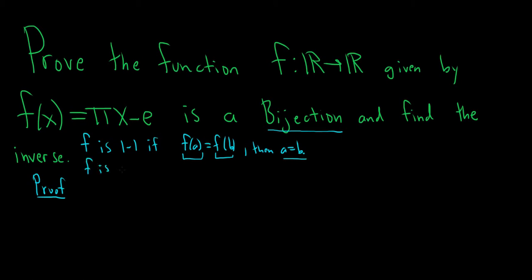f is surjective or onto if... for all (and I need to identify f here for this), f is a function from A to B in this definition. So for all little b in the codomain, there exists some little a in the domain such that f takes a and sends it to little b. So f(a) is equal to b.